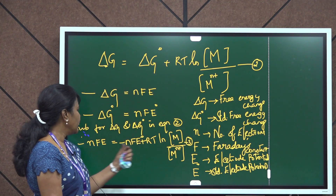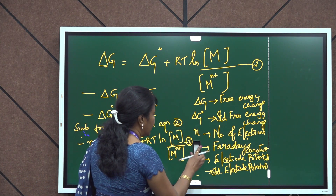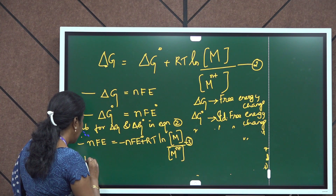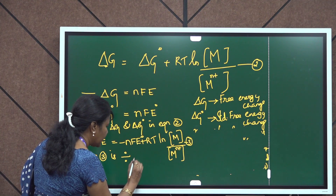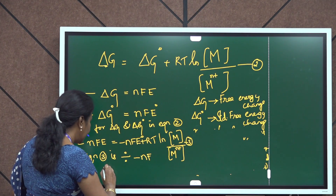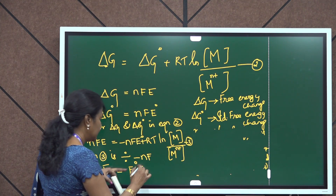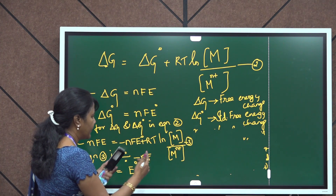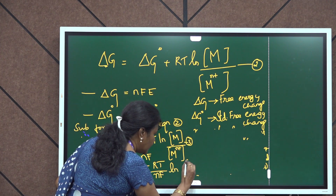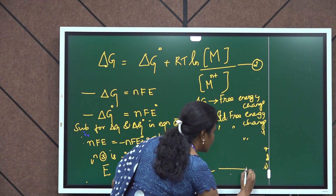Now we can simplify equation 3. Notice that minus nF is common in both terms. We are going to divide throughout by minus nF. Dividing equation 3 by minus nF, we get E = E naught + (−RT / nF) ln (M / M^(N+)). This is assumed as equation number 4.